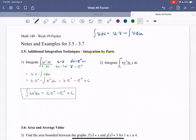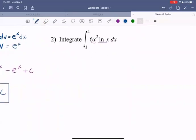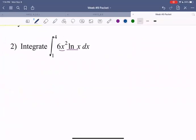In this video, we're going to continue our work on integration by parts and look at example two. We want to compute the integral from one to four of six x squared ln of x.